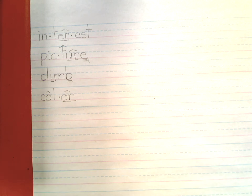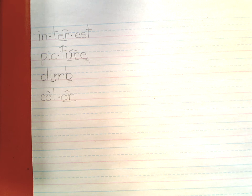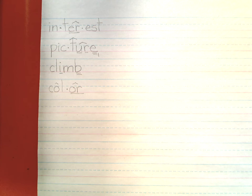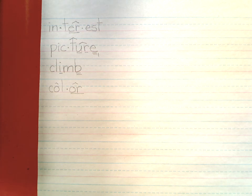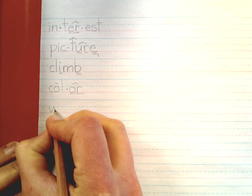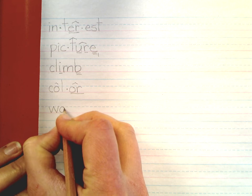Our next two-way word is 'wagon.' How do we say wagon to spell it? 'Wag-on.' Say that with me: wagon. Make sure you're finding the syllables. Go ahead and write wagon — say the sounds while you write it and then mark it. Our first syllable is 'wag,' our second syllable is 'on.'